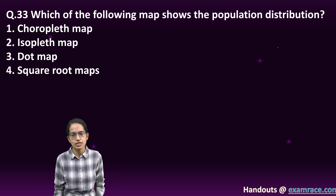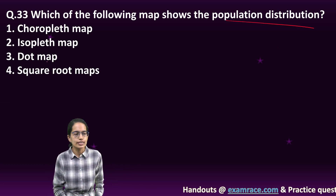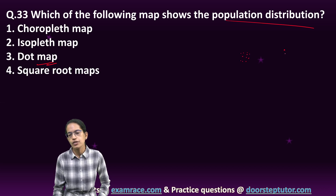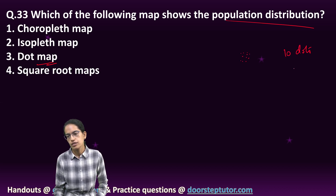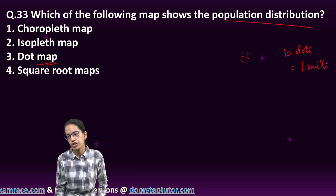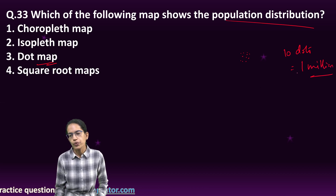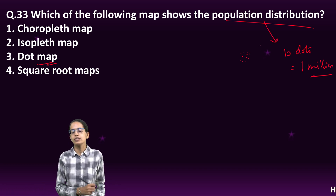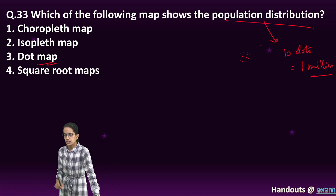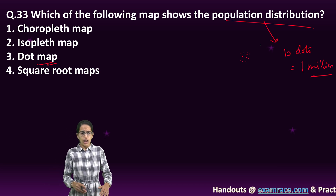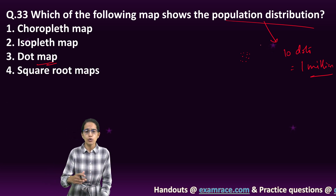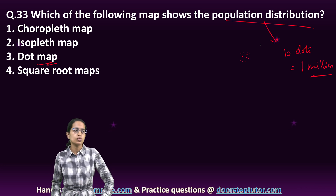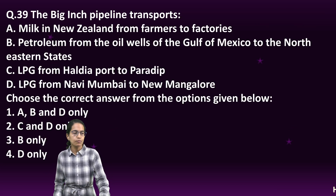The next: to show population distribution, we use dot density or dot maps. With dots, we represent — for example, 10 dots represent 1 million population, so 20 dots would represent 20 million population and so on. The dots represent population distribution. Isopleth are lines, choropleth are colors, and square loop maps does not make sense. So dot map is the right answer.